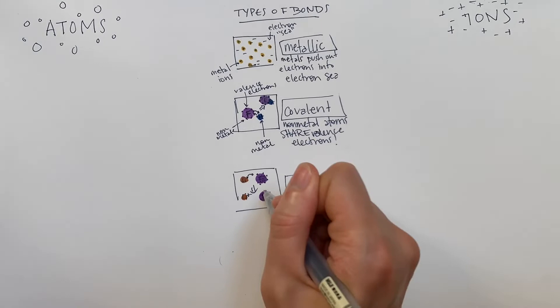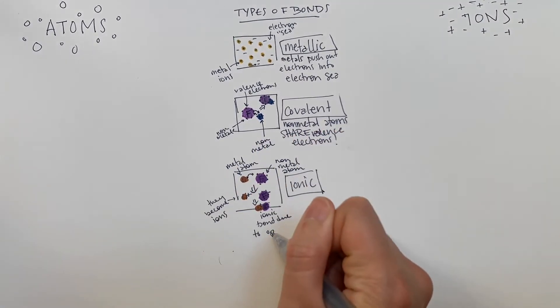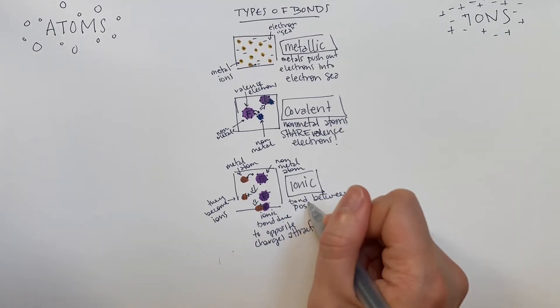We've also learned that metals and non-metals interact to form ionic bonds, where metals form positive ions by giving away their valence electrons, and non-metals form negative ions by gaining extra electrons enough to fill their valence shell.